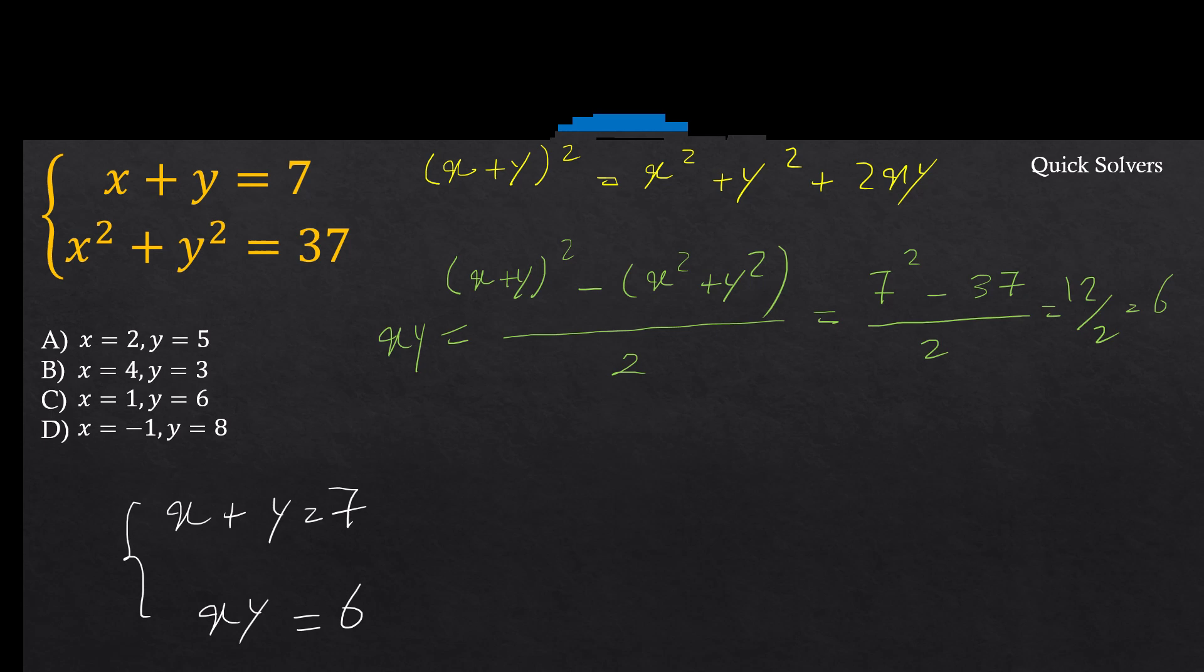For example, since xy = 6, this tells me that x and y both should be either positive or negative. But since their sum is positive (x + y = 7), they both cannot be negative. So x and y both should be positive. This means D cannot be the answer.